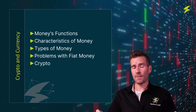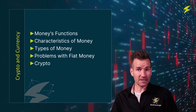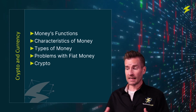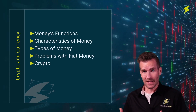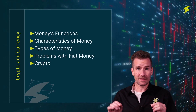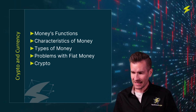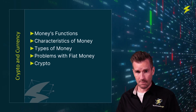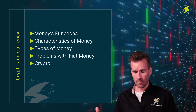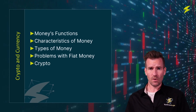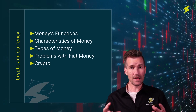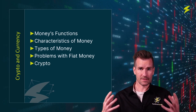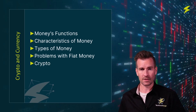In this video, we're going to start out by talking about the functions of money and why money exists. Then we're going to get into different characteristics money has, the different types of money, the problem with fiat money, and finally wrap things up with talking about crypto and what crypto does to help solve some of these problems that regular currency has.